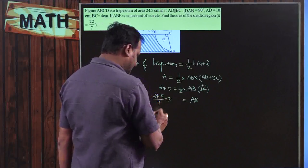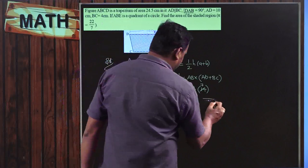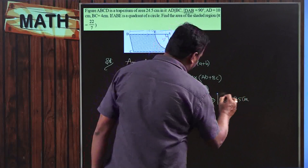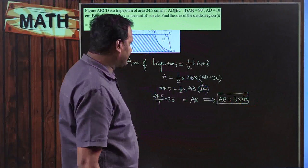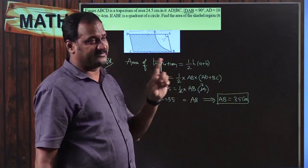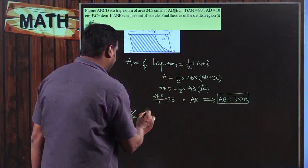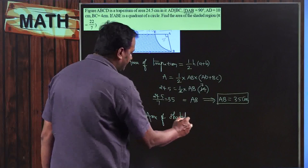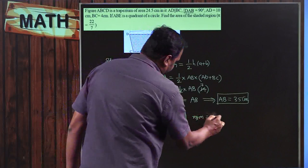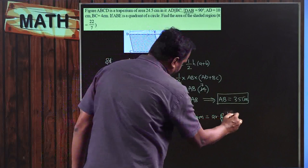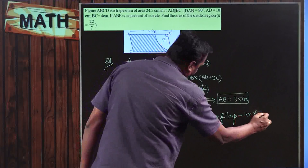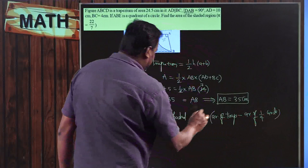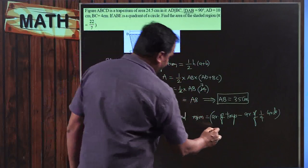7 threes are 21, and 7 fives are 35. Therefore the length of AB is going to be 3.5 centimeters. Moreover, AB = 3.5 is the radius of the quadrant part of the circle. So directly I am going to find the area of the shaded region. Area of shaded region = area of trapezium − area of one-fourth part of circle. Area of trapezium was already given as 24.5.